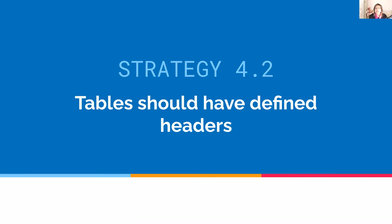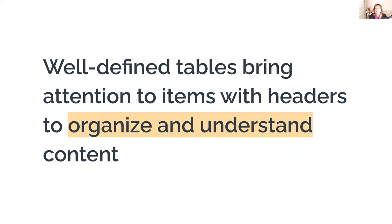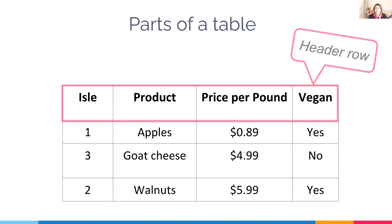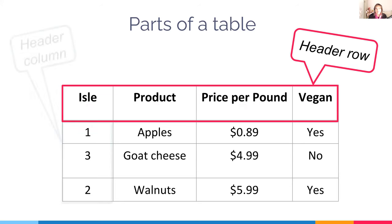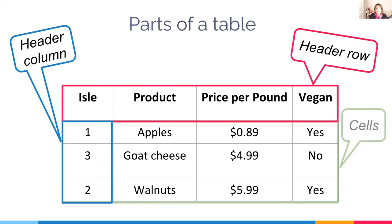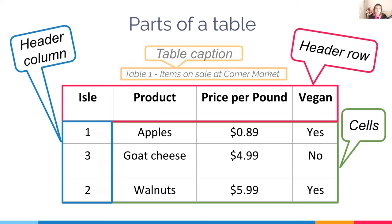Tables should have defined headers. Well-defined tables use headers to organize and understand content. Tables should also have captions that identify what the table is for and what it's doing in that context. Let's look at the parts of a table: header rows at the top, where the scope is columns because they head each column; header columns usually on one side, where the scope is rows because they head each row; data cells in the remainder; and the table caption, which is very important because it provides a lot of context.